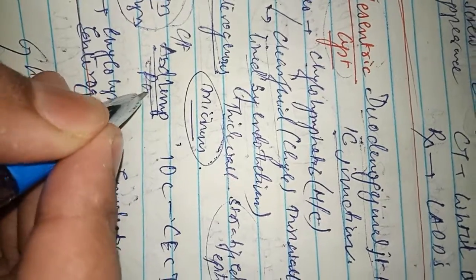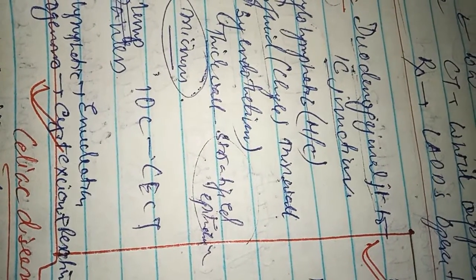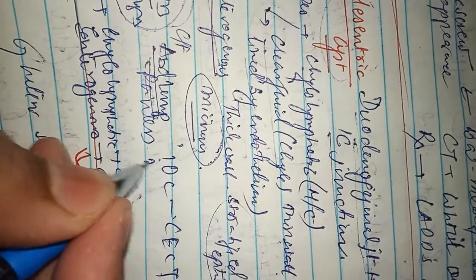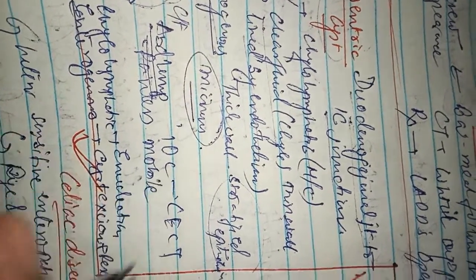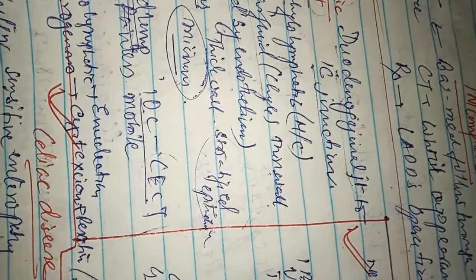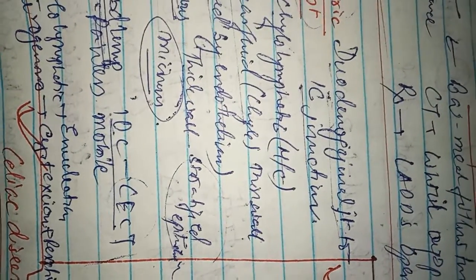The abdominal lump is painless and there is mobility of the swelling. On examination, we see it is mobile. The investigation of choice is CECT — that is contrast-enhanced CT scan.